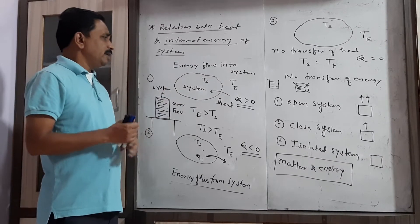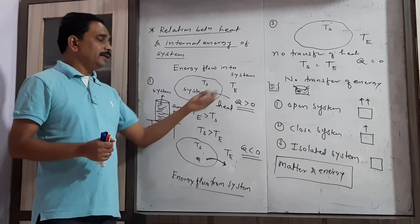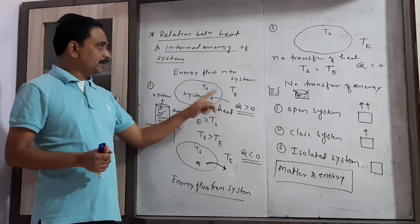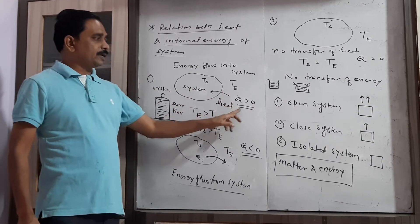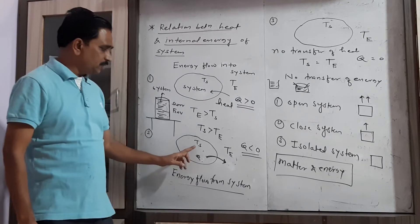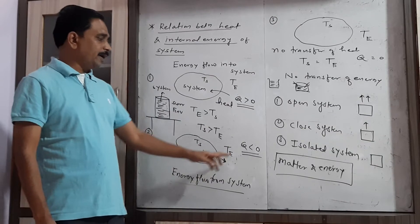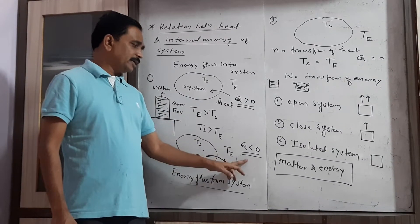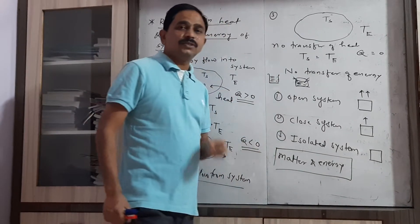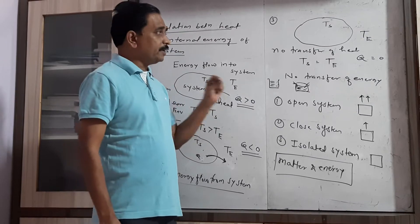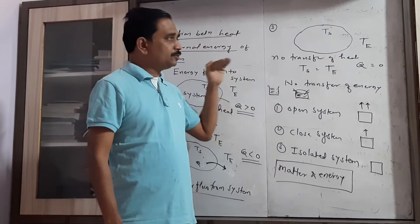To quickly revise: when the temperature of the environment is greater than the temperature of the system, heat flows from environment to system and internal energy increases — Q greater than zero. When temperature of the system is greater than temperature of the environment, heat flows from system to environment, heat is released, and Q is taken as negative, less than zero. When temperatures of both are equal, there is no transfer of heat.